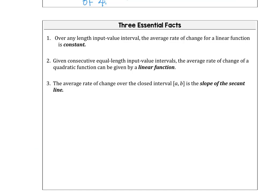Here's a summary of what we've discovered. Over any length input value interval, the average rate of change of a linear function is constant. For consecutive equal-length input value intervals, the average rate of change of a quadratic function will be given by a linear function. And the average rate of change over a closed interval from a to b is known as the slope of the secant line.